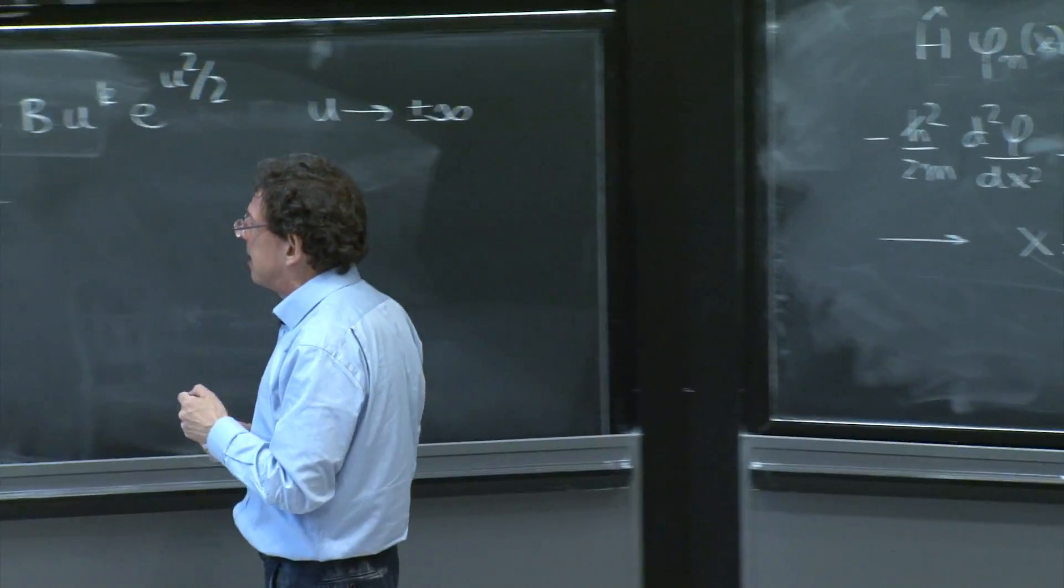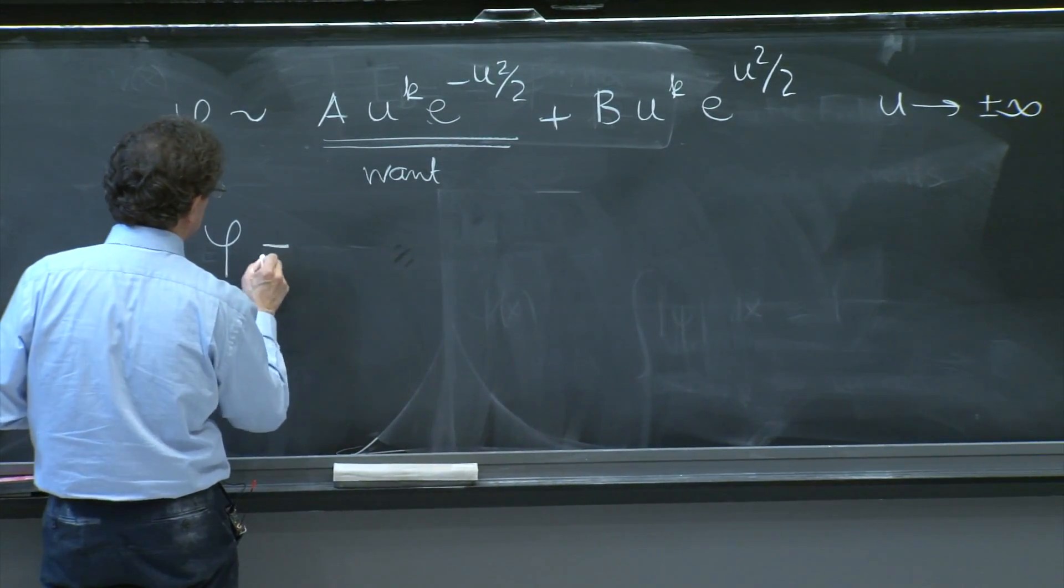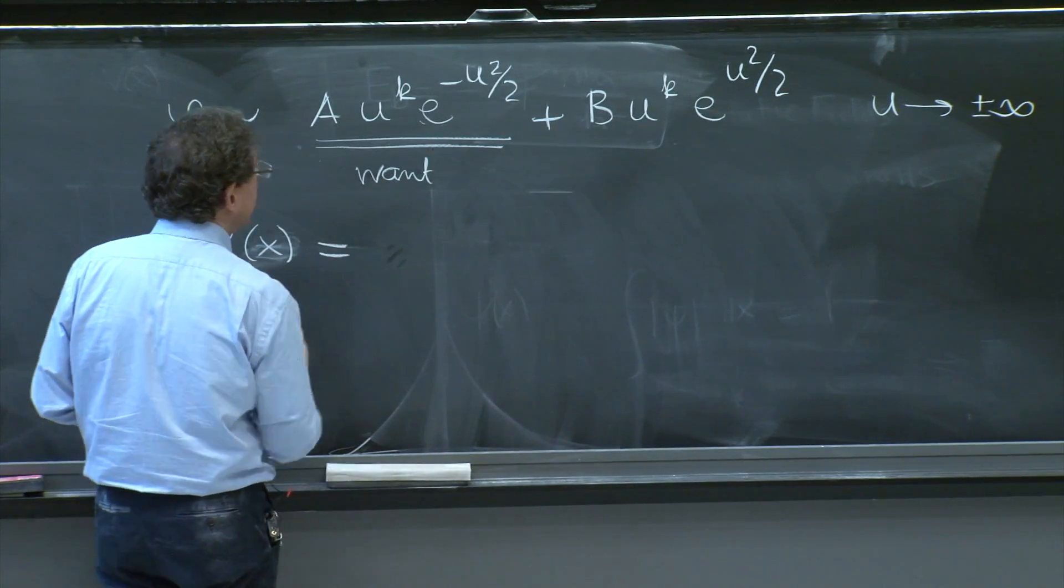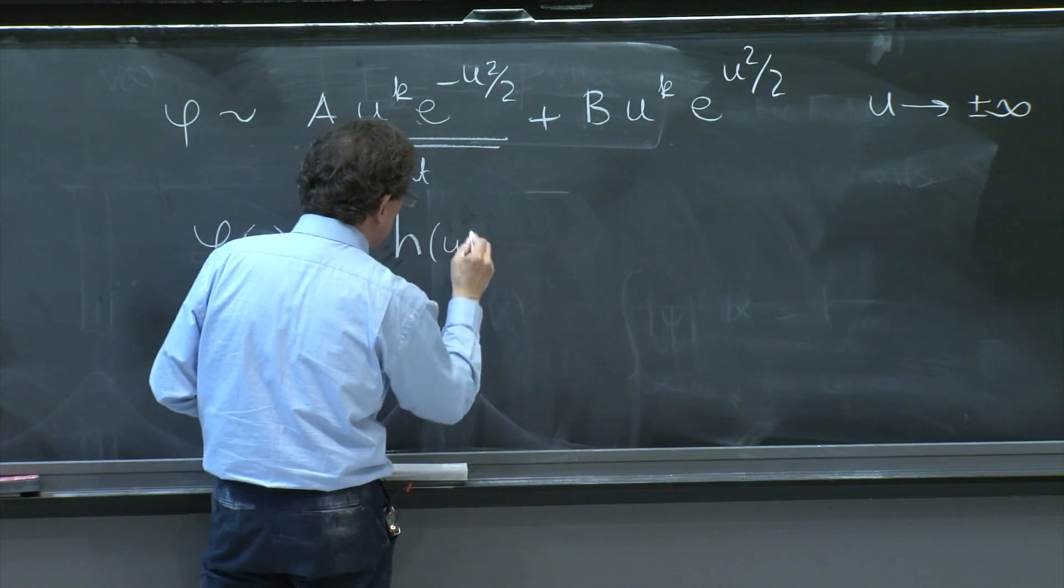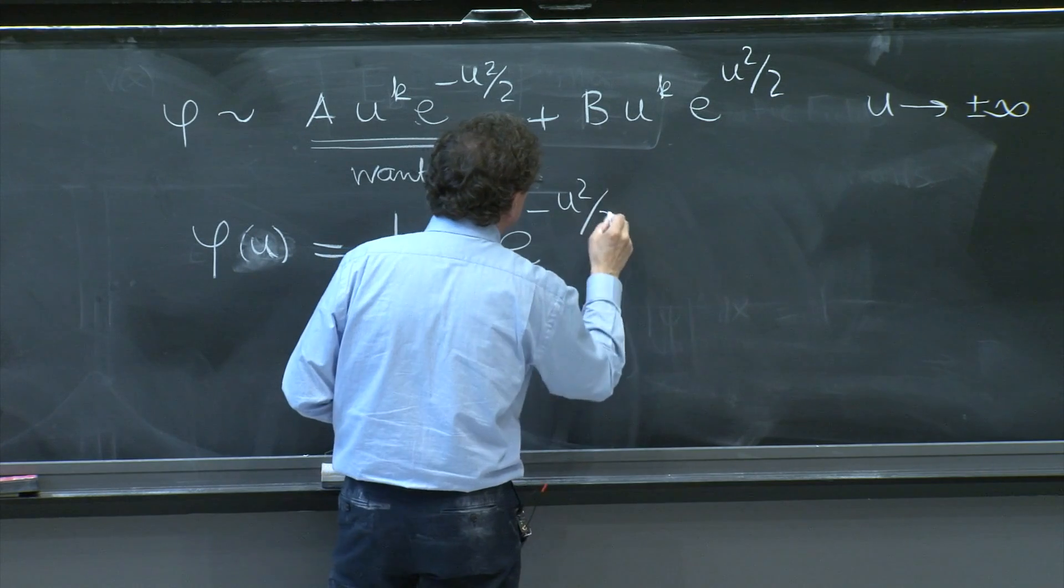Now, without any loss of generality, I can write, I want to look. I will write φ of x is going to be, not of x anymore, u. H of u times e to the minus u squared over 2.